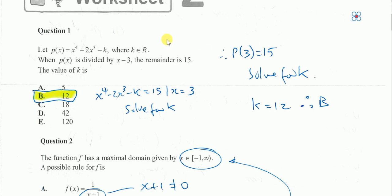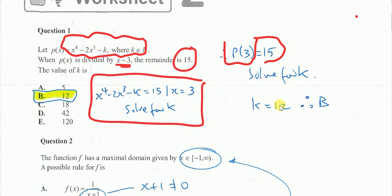Okay, in question number one, it's to do with the remainder theorem because I'm given a remainder of 15. So I've divided by x. If I on my calculator do p(3) equals 15, solve for k, and this is what I entered in the calculator, k equals 12 comes up, that's answer B.